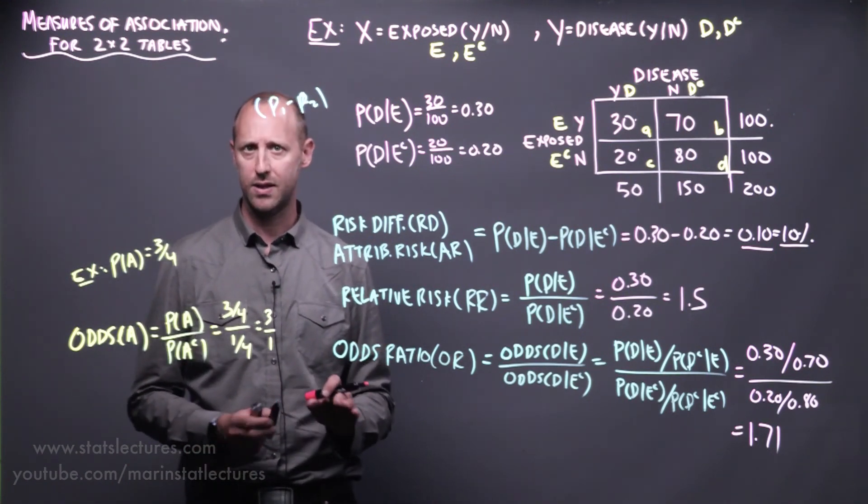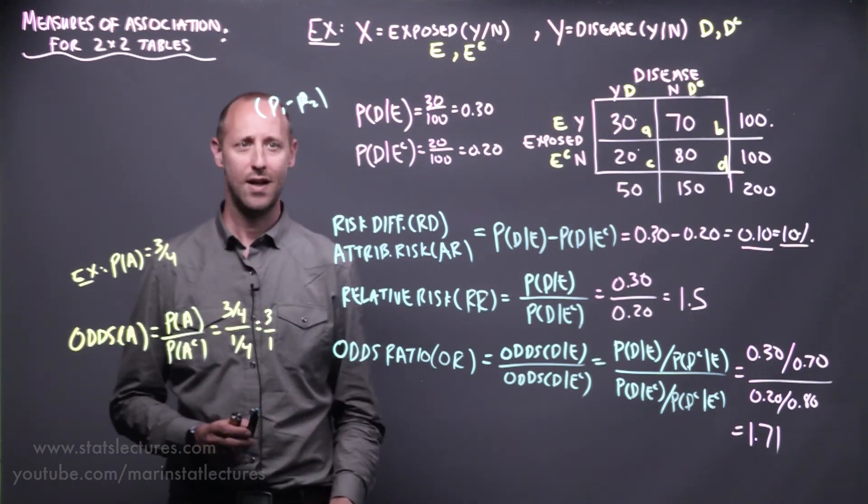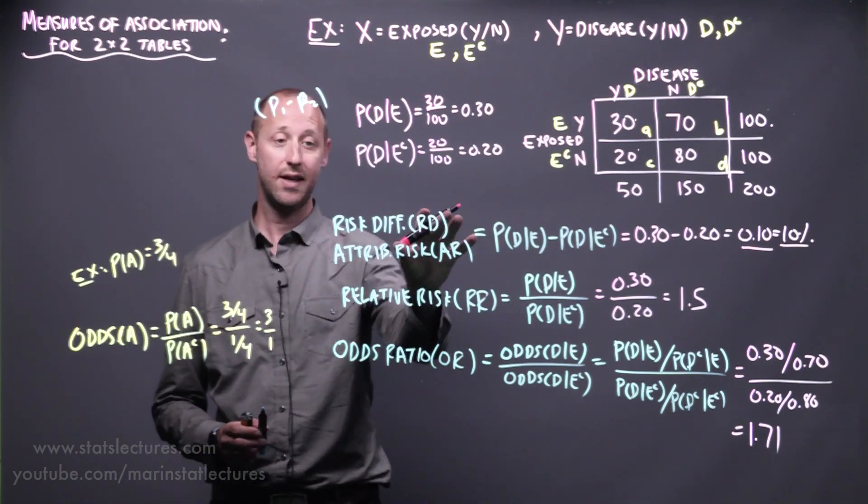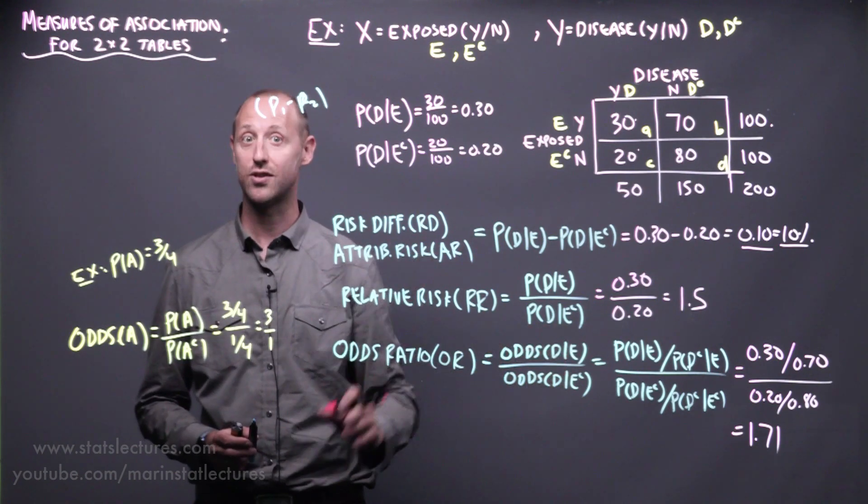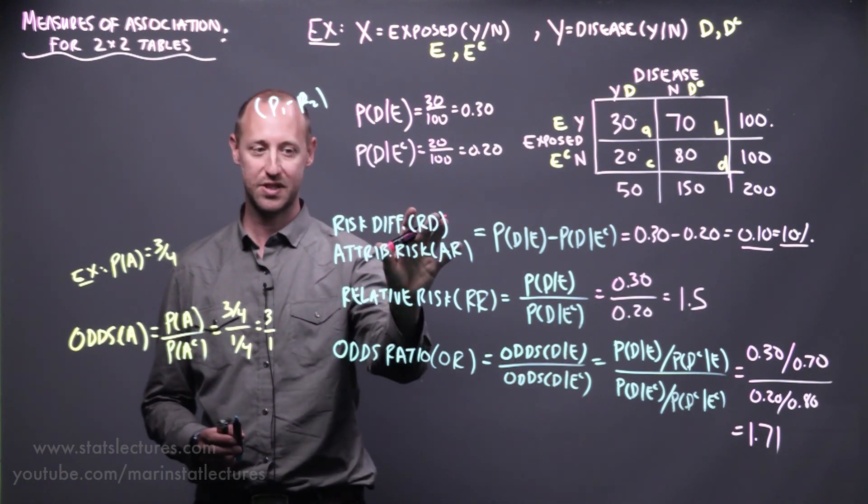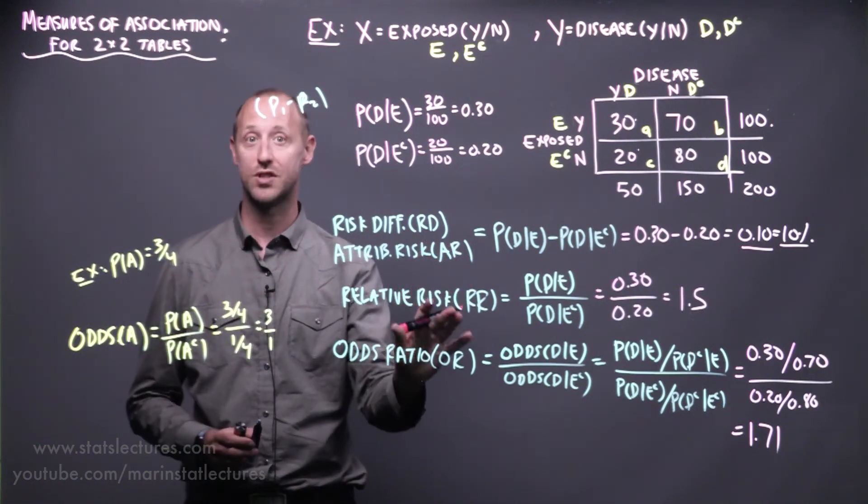We can dig a little bit deeper into each of these topics. Eventually, we're going to build up to learning how to take some of these measures and adjust for other confounding factors. For now, we're laying the base of what is a risk difference, what is a relative risk, and what's an odds ratio.